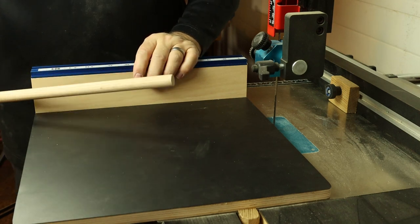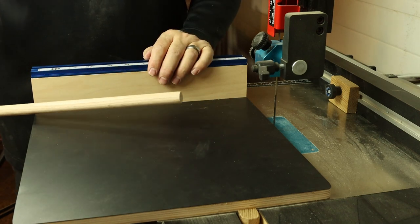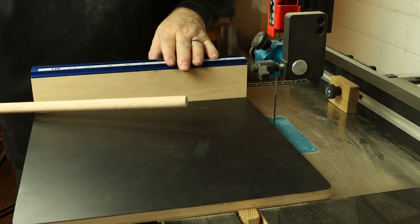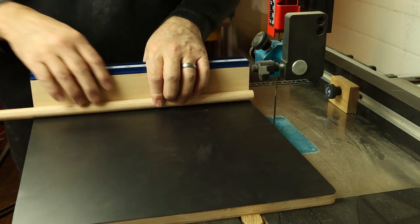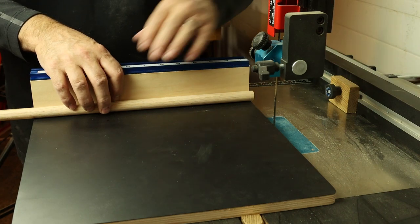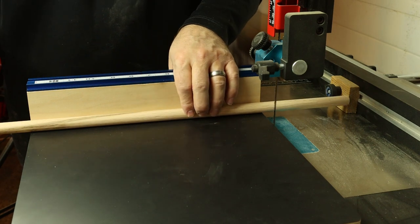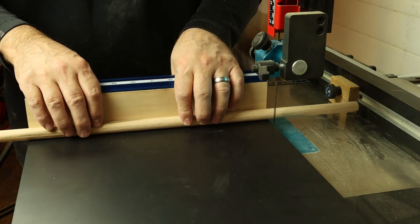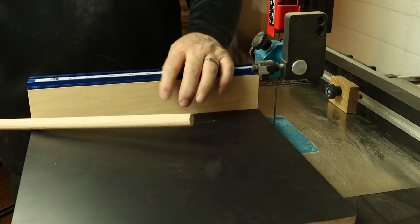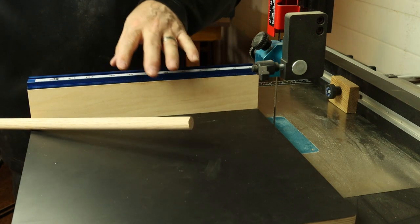The sled slides nice and easily along the miter track of the bandsaw and there's actually two ways that you can use this sled. If you don't want to mess with the top track you can actually just use it in conjunction with a fence if you have one with a stop block. Slide your material down to the stop block and advance the sled to make the cut. We'll demonstrate that and then we'll go ahead and show you how to use it in the traditional way with the supplied stops for this track.